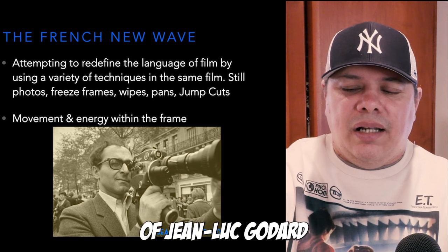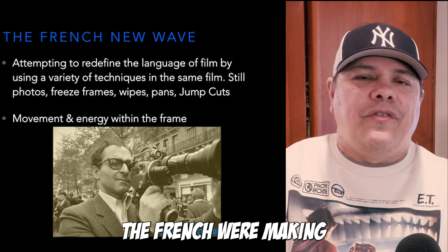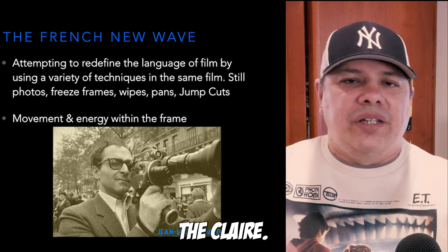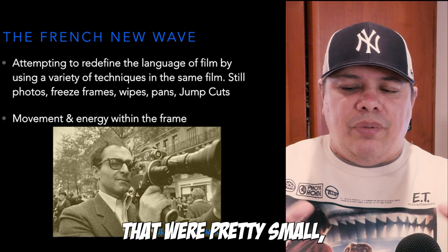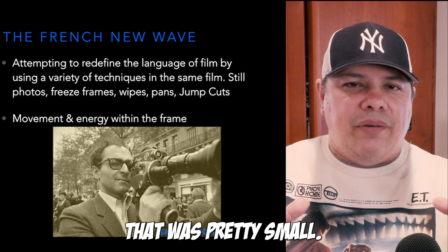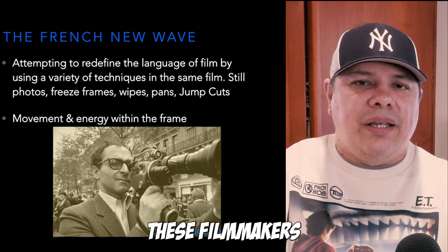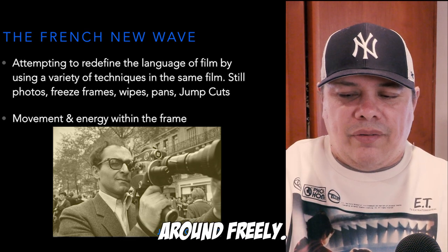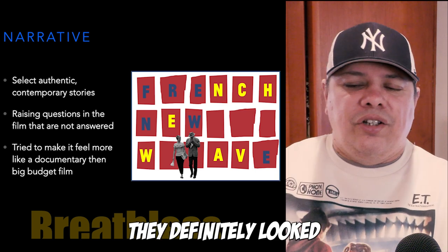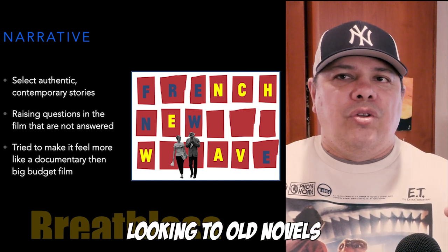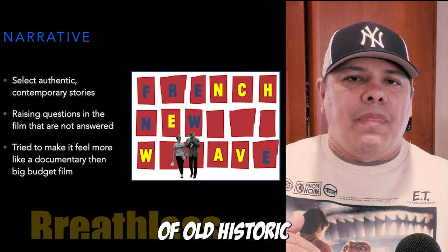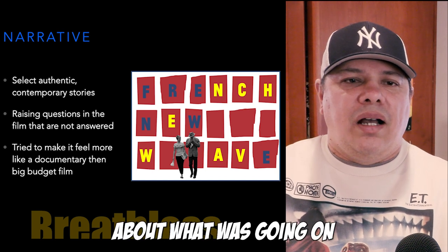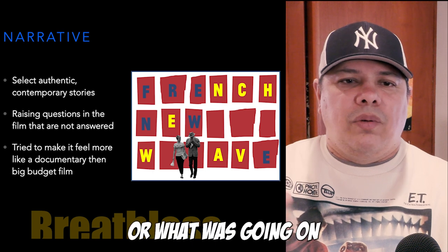You can see there's a picture of Jean-Luc Godard with one of the cameras he was using. The French were making a lot of very small, compact cameras that these filmmakers used — the Caméflex, the Bolex, the Éclair. These pretty small cameras allowed filmmakers to do really creative, freeing cinema because the camera was so tiny and could move around freely. They definitely looked for authentic, contemporary stories — not old novels or historic literature, but modern stories that made a statement about what was going on politically or in society at the time.